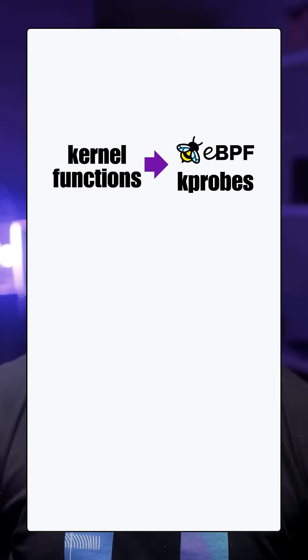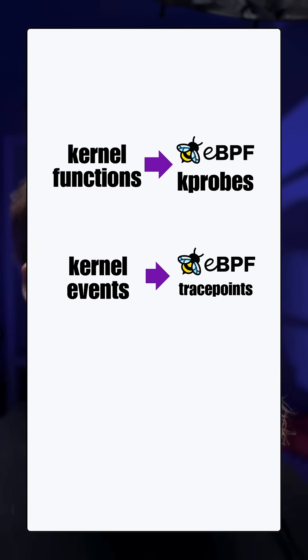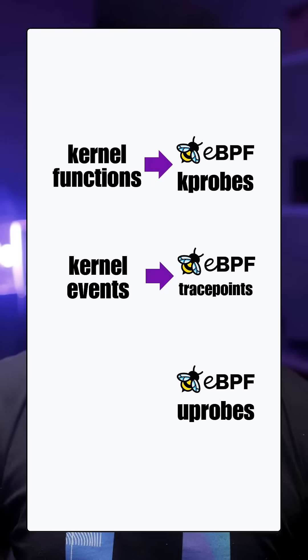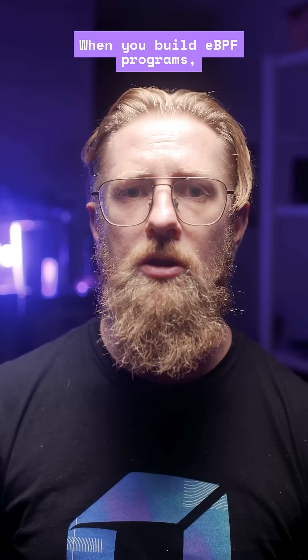There are K probes, triggered by kernel functions; trace points, triggered by kernel events; and U probes, triggered by user space functions.